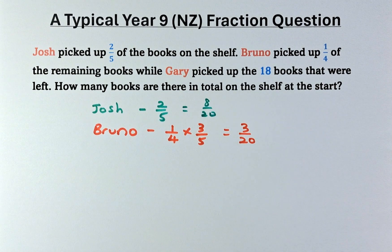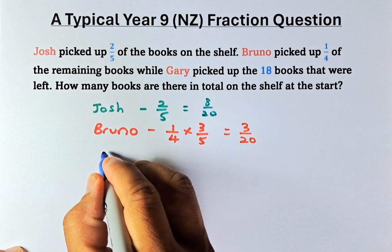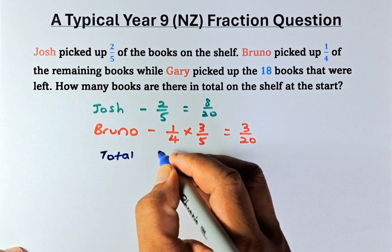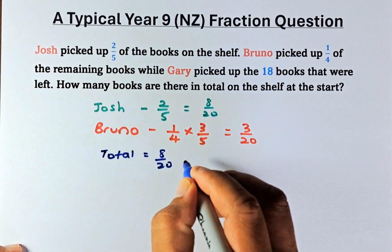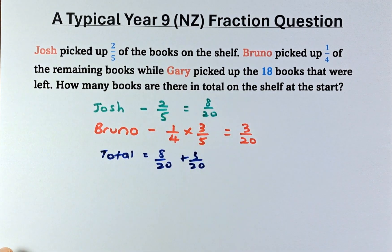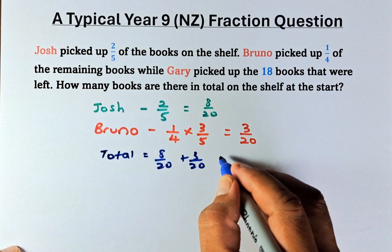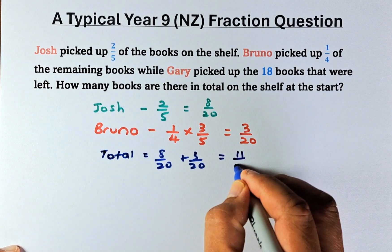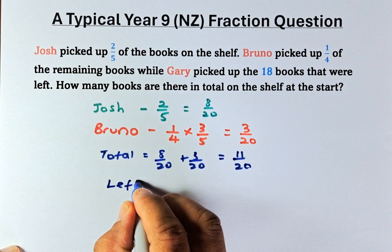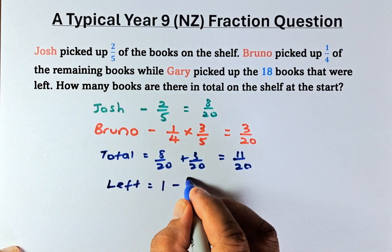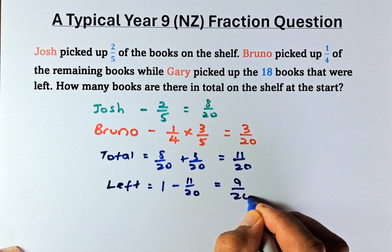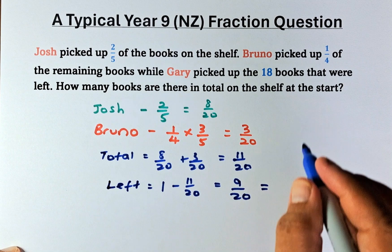So now we know that total is going to be eight over twenty plus three over twenty. Josh picked up eight over twenty and Bruno picked up three over twenty, and they have picked up eleven over twenty. So what is left is going to be one minus eleven over twenty. That is equal to nine over twenty. And that is what is left, that is what Gary picked up.